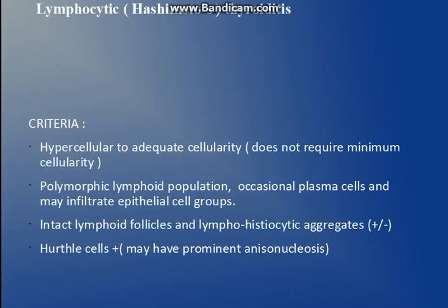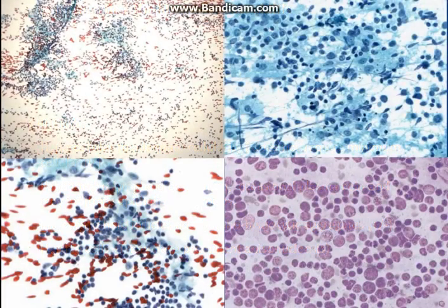Even if we do not specify the particular subcategory — whether it is Graves disease or nodular thyroiditis — we can give a broad category to the smear. For thyroiditis, the smear is hypercellular to adequately cellular. A lymphoid population is present; it can be polymorphic, even to the level of lymphoid follicles; lymphohistiocytic aggregates can be seen; occasional plasma cells can be seen; and these can infiltrate the follicular cell groups. This also comes under category 2.